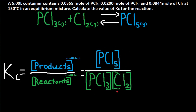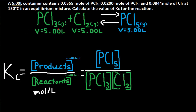Now we just plug in the numbers we have available. It tells us that a five-liter container contains this amount of PCl3, this amount of PCl5, and this amount of Cl2 at 150 degrees Celsius in an equilibrium mixture. Remember that concentration is equal to moles divided by liters. It gives us liters and moles, so we have to calculate concentration ourselves. Everything is in a 5.00 liter container. PCl3 has 0.0555 moles; moles divided by liters gives us a concentration of 0.0111 moles per liter.